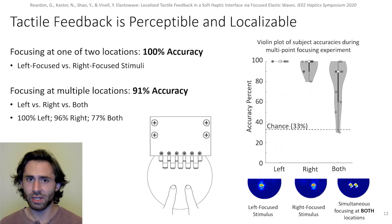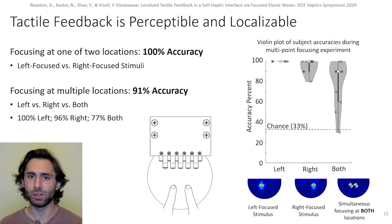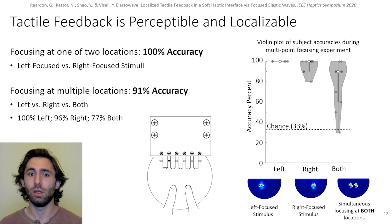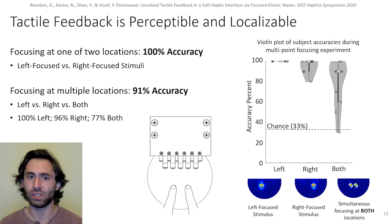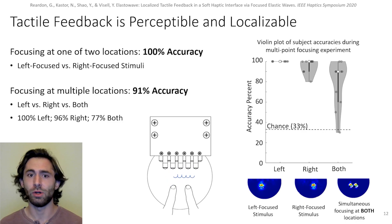We performed a psychophysical study and found that the produced tactile feedback was localized and perceptible. In a first experiment, 10 subjects were asked whether a stimulus was focused to the left or right index finger — all subjects had 100% accuracy. In a follow-up experiment, the same 10 subjects were asked whether a stimulus was focused to the left index, right index, or both fingers simultaneously. We found that all three stimuli could be discriminated between with high accuracy.